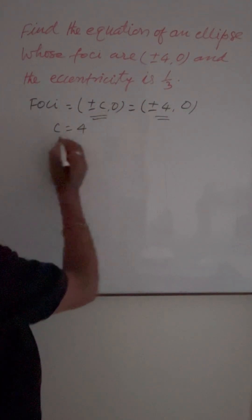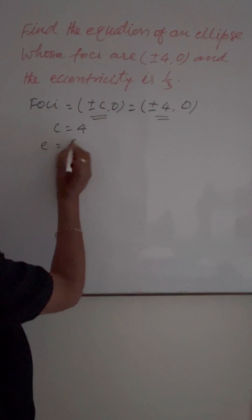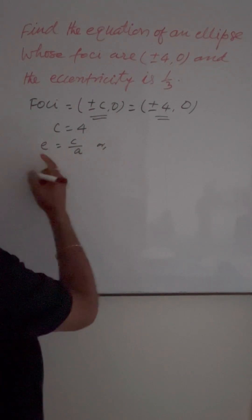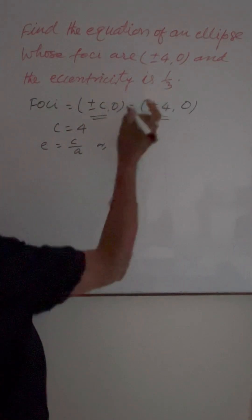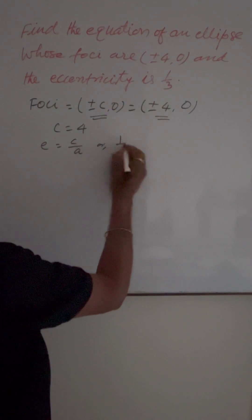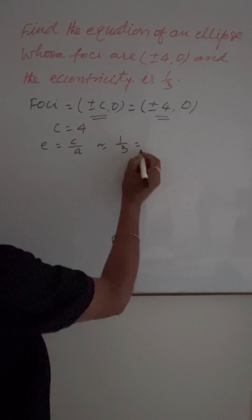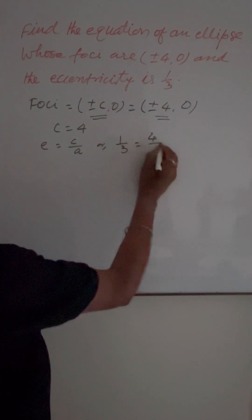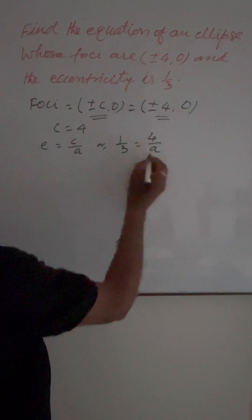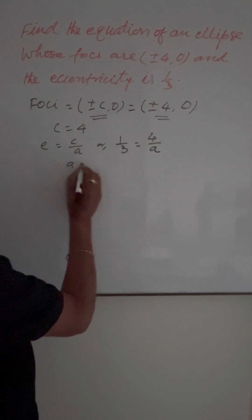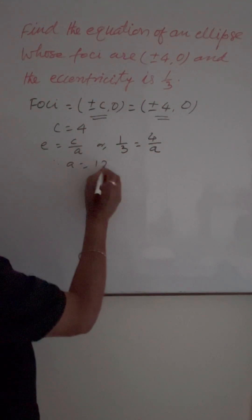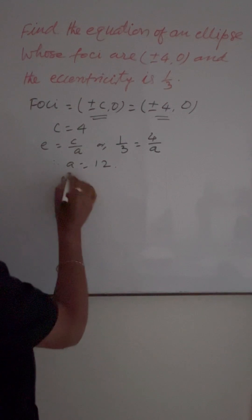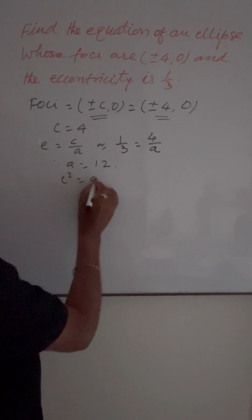We also know that e is equal to c by a. Here the eccentricity is given as 1 by 3, so 1 by 3 is equal to c, which is 4, divided by a. Therefore a is equal to 12.